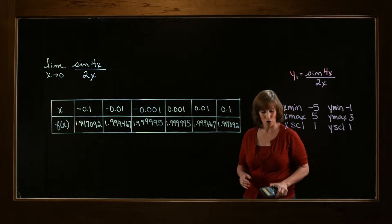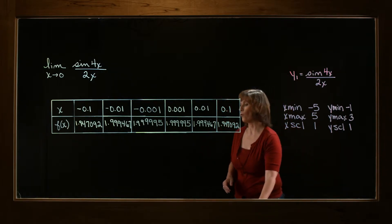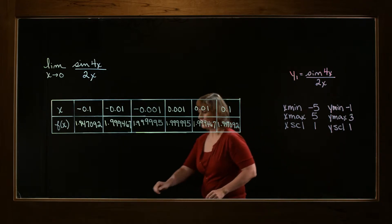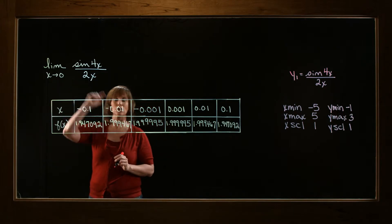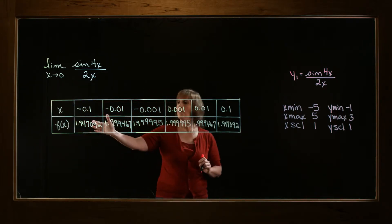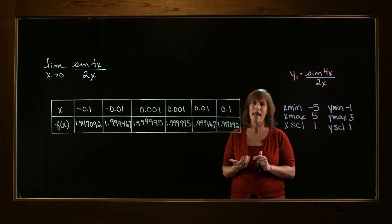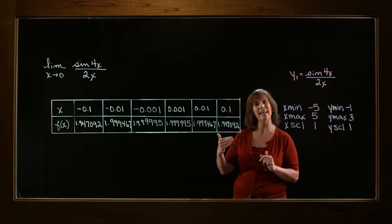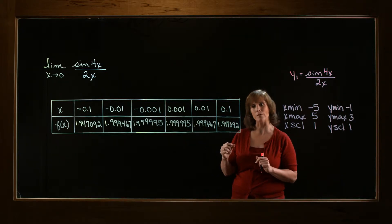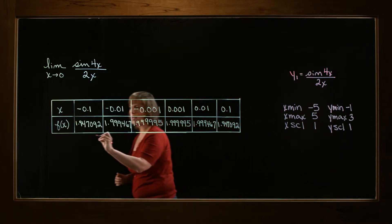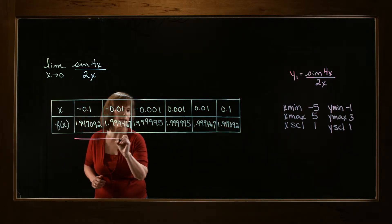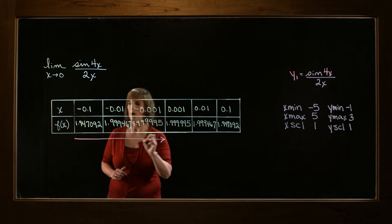Okay, now it's time to interpret my table. So let's see what happens as x gets close to 0. Well, the first three numbers are telling me what happens as I approach 0 from the left. I'm taking negative numbers, so it's smaller than 0. But I'm getting closer and closer to 0. So I'm looking at what's happening as I'm coming in this direction.